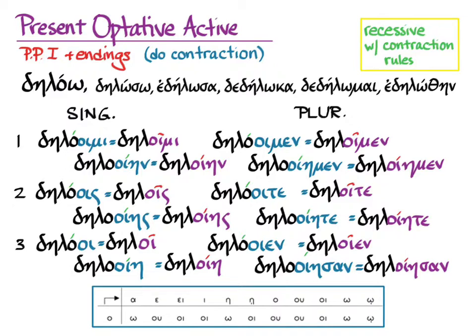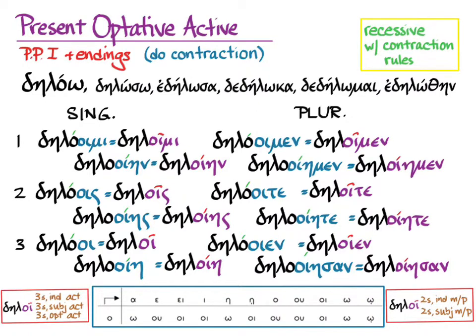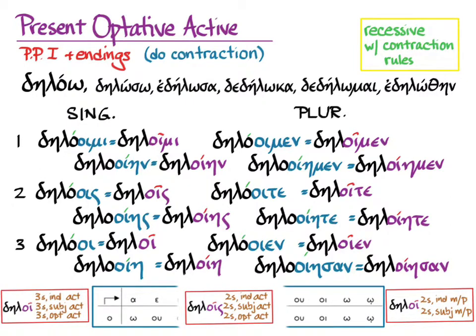This is perhaps the time to note that omicron contract words have an unusual number of overlapping forms. For instance, dēloi can be third-person singular indicative active, third-person singular subjunctive active, or third-person singular optative active. Dēloi can also be second-person singular indicative middle/passive and second-person singular subjunctive middle/passive — that's actually seven different forms one spelling can be. Additionally, dēlois can be the second-person indicative active, the second-person subjunctive active, and the second-person singular optative active. Lots of possibilities to allow for.